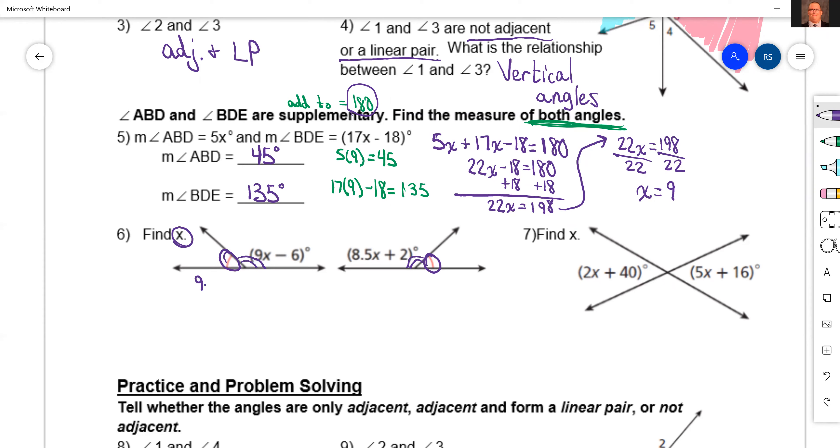So to find x, we just set them equal to each other. We're going to have 9x minus 6 equals 8.5x plus 2. Then we start doing our algebra. Subtract 8.5x from both sides, it's going to give me 0.5x minus 6 equals 2. Add 6, it's going to be 0.5x equals 8. We're going to have to divide by 0.5.